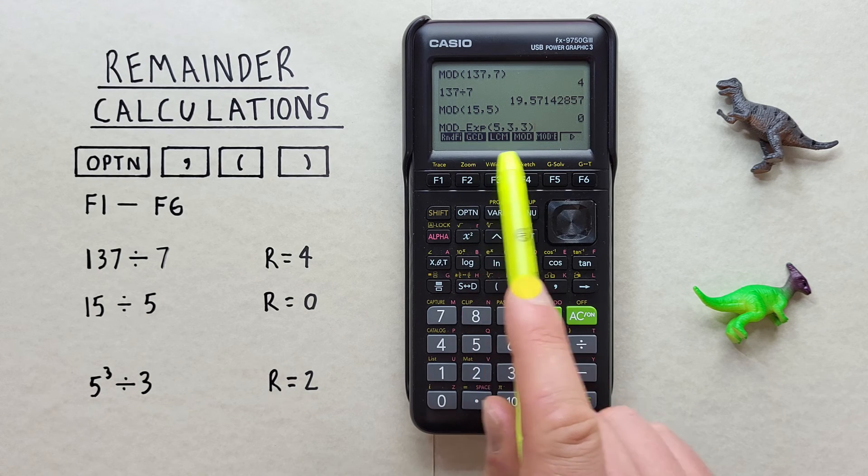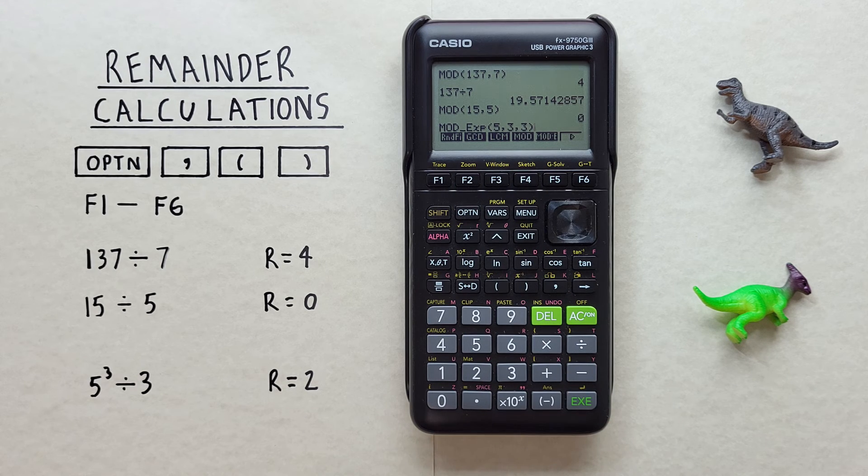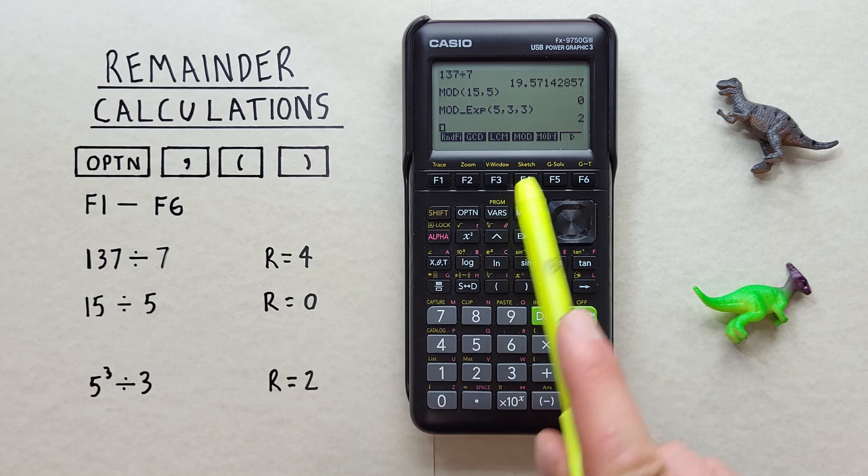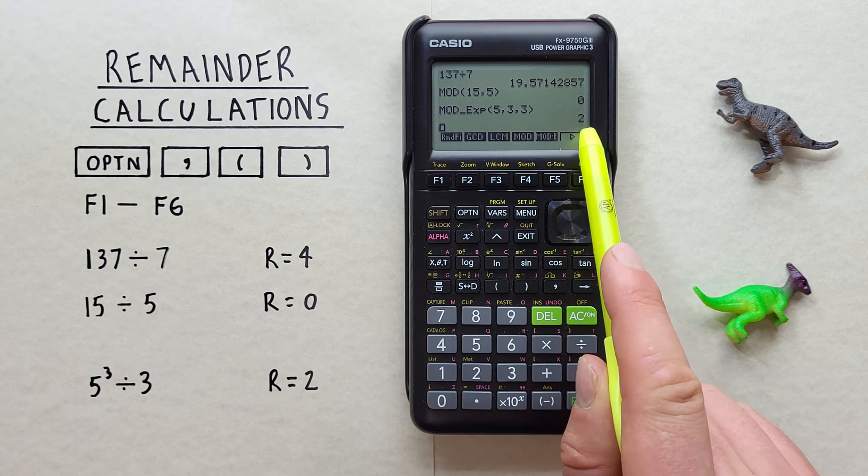So for this one, we're entering 3 numbers. And we hit exe. And there we go, we get a remainder or modulus of 2.